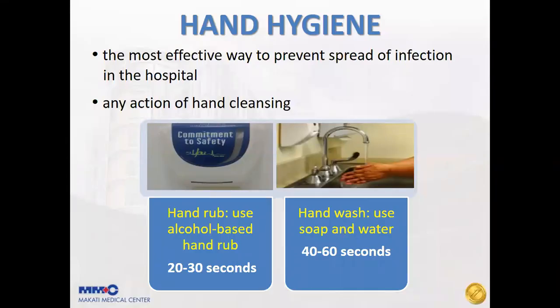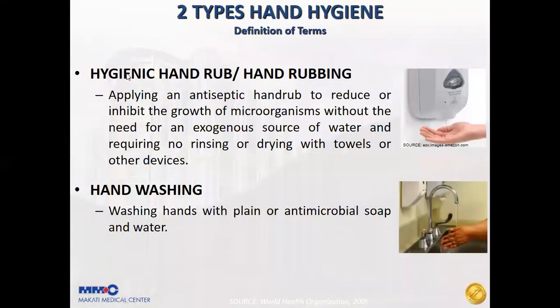Hand hygiene is the most effective way to prevent the spread of infection in the hospital setting. It can refer to any action of hand cleansing — either hand rubbing or hand washing. In hygienic hand rubbing, we apply an antiseptic hand rub to reduce or inhibit the growth of microorganisms without the need for water, rinsing, or drying with towels. In hand washing, we wash our hands with plain or antimicrobial soap and water.